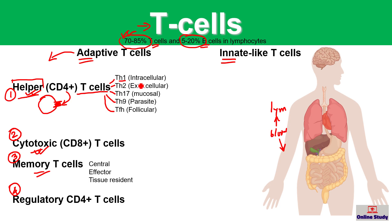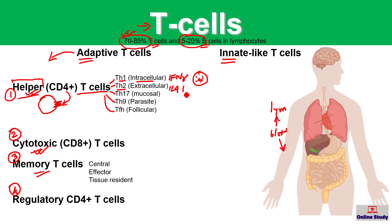Th1-type CD4 T cells produce interferon-gamma and help to clear intracellular bacteria or viruses. Th2-type helper T cells produce interleukin-4 and interleukin-5 cytokines and help to clear extracellular bacteria or viruses.